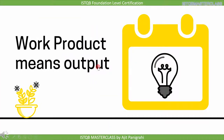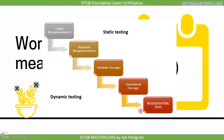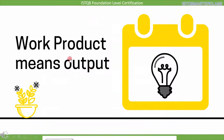Work product means output. These are the steps followed during development of software in an organization: first, get user requirements; then develop system requirements; then comes the global design; next is detailed design; and the last step is implementation where software is developed. So in the system requirement stage, the output is system requirement, which becomes our work product. Similarly, in the global design and detail design stage, the output is a design document, so our work product will be the design document. And in the implementation stage, the output is code or software, so the work product will be code.